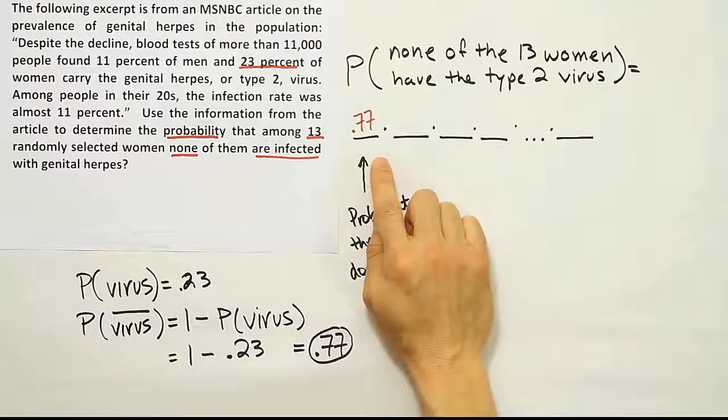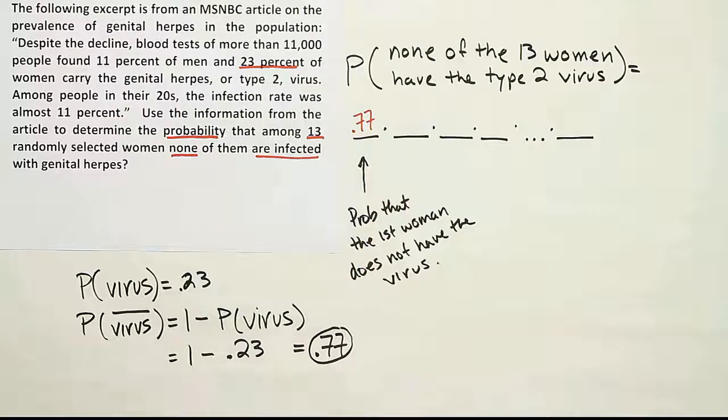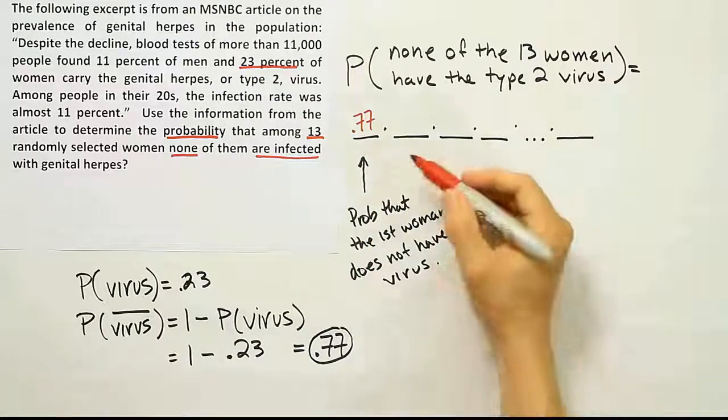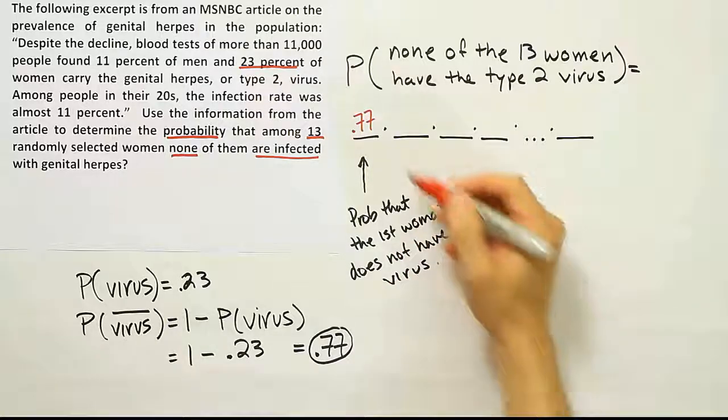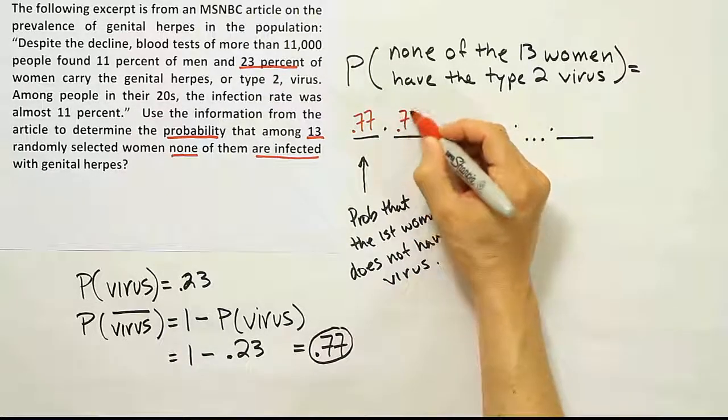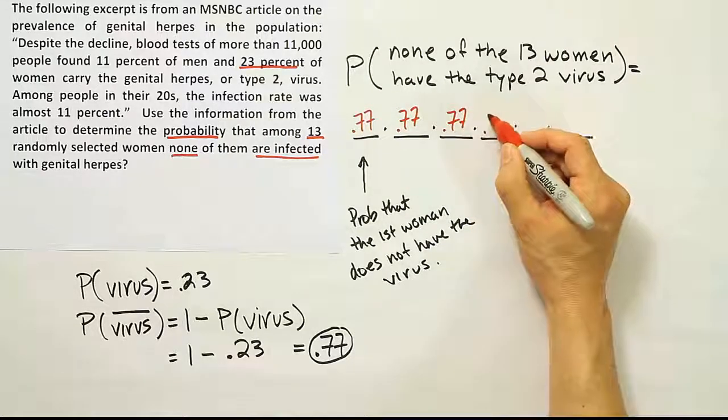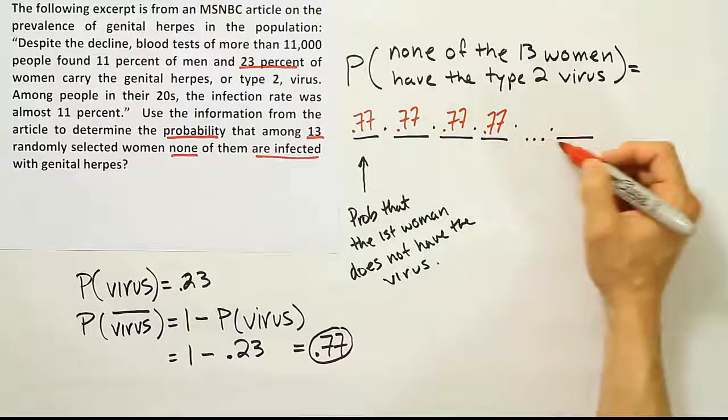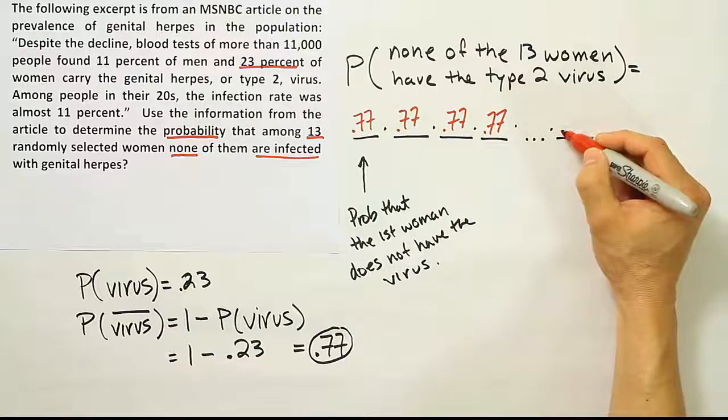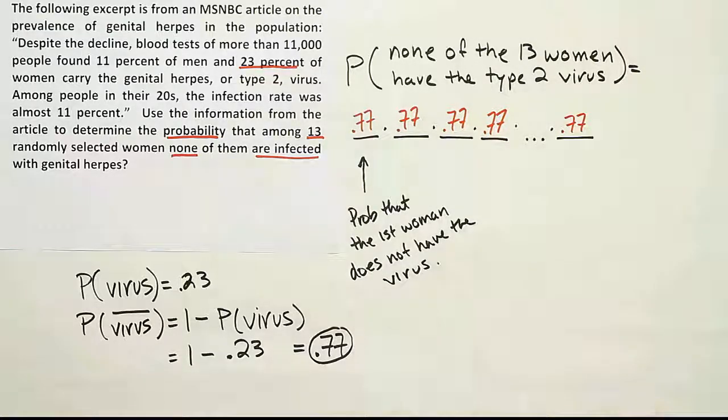Okay, so let's look at this next space and say, well, this would be the probability that the second woman does not have the virus. We would assume that's the same 77%, and it would be the same for the third woman and the same for the fourth woman and fifth, sixth, seventh, all the way up to the 13th woman. There'd be a 77% chance that those women do not have the virus.